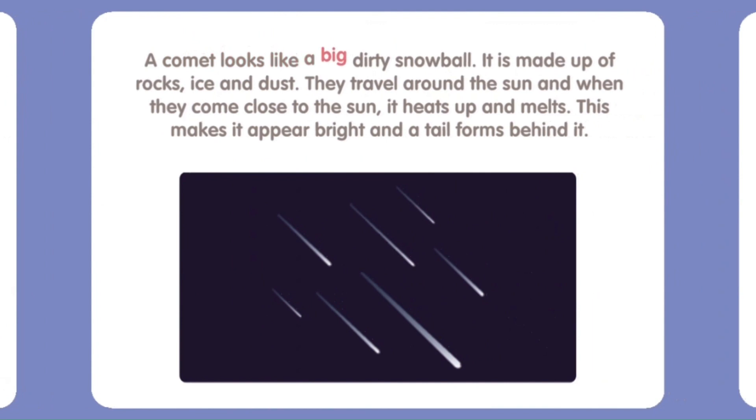A comet looks like a big, dirty snowball. It is made up of rocks, ice, and dust. They travel around the sun and when they come close to the sun, it heats up and melts. This makes it appear bright and a tail forms behind it.